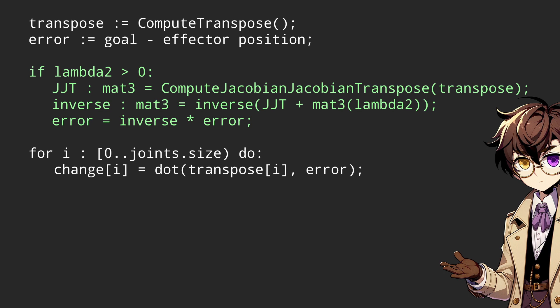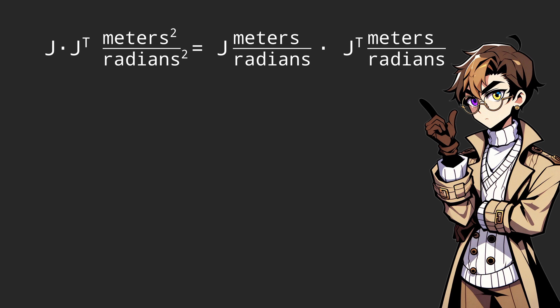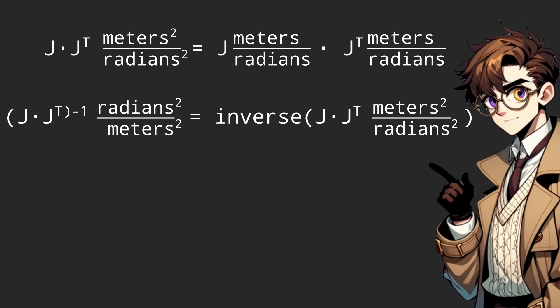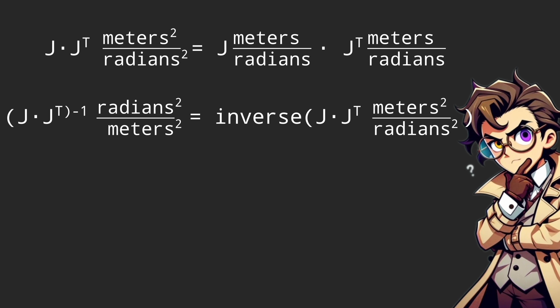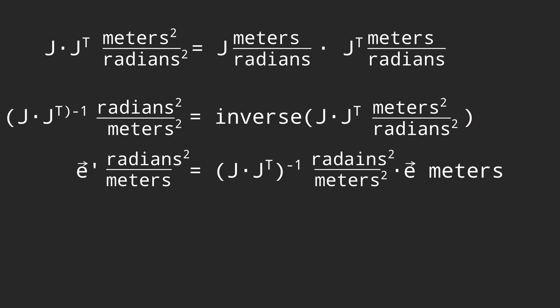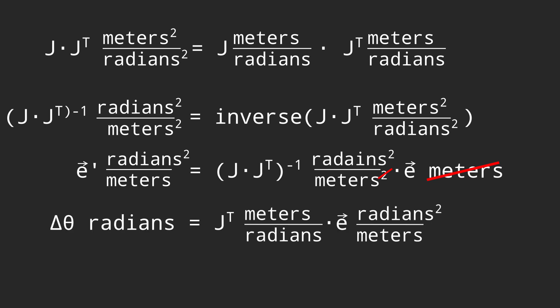Ignore the lambda addition for now, what we want to focus on is the units. First we multiply the Jacobian by its transpose. Because we multiply the matrix by itself and the Jacobian is in terms of meters per radian, the resulting squared matrix is in meters squared per radian squared. Now we take the inverse. So we flip it and now the units are radian squared per meter squared. We multiply the error by the inverse so the error now has units of radian squared per meter as the error's meter unit cancelled. Finally just like in the transpose method we multiply the error by the transpose. The units now cancel out and the result now has the units right.